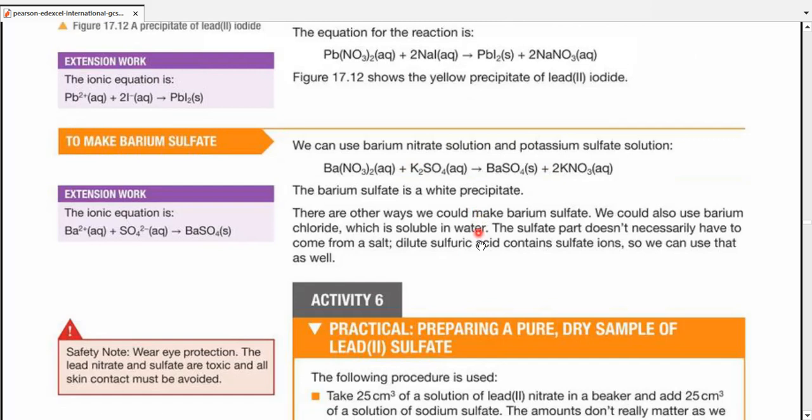Barium sulfate. We're going to use barium nitrate and we're going to use the sulfate with sodium or potassium. Here we have the example of potassium. Barium sulfate is a white precipitate. There are other ways we can form barium sulfate. We could use barium chloride, which is also soluble in water, and the sulfate part can come from potassium or sodium salt or it doesn't necessarily have to come from a salt.